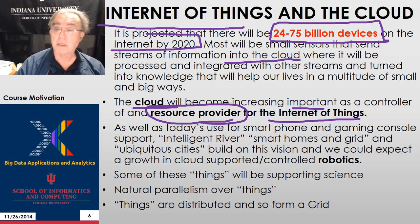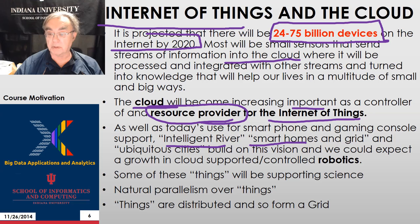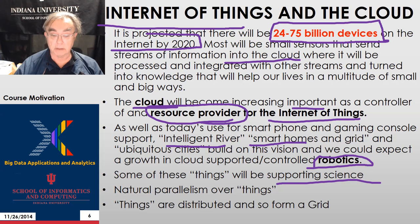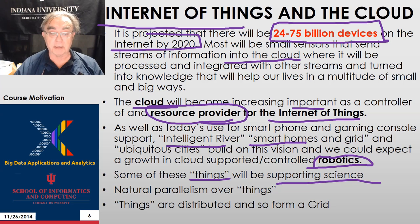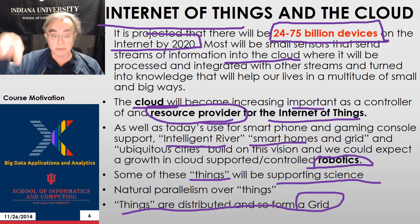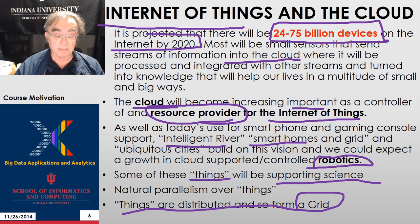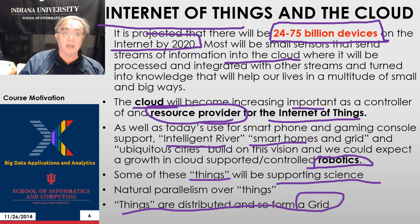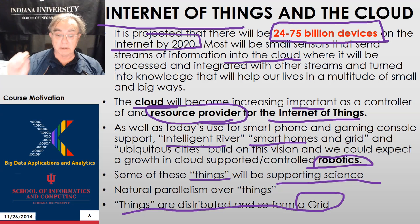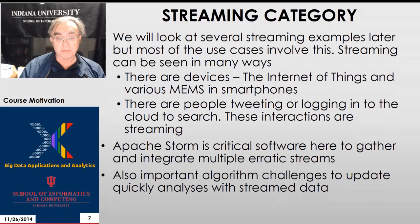The world will be full of tiny computers. Moore's Law says CPUs are getting smaller and smaller, so you can sprinkle them around — smart dust — and have intelligent rivers, smart homes, smart grid, ubiquitous cities. We also expect lots of work on robotics. These Internet of Things devices are very naturally parallel — everything can be processed largely independently. Clouds are super suitable for processing IoT things, because clouds love to process lots of independent things and the synchronization overhead clouds have is irrelevant. The things themselves are actually a grid, supported by a cloud controller.